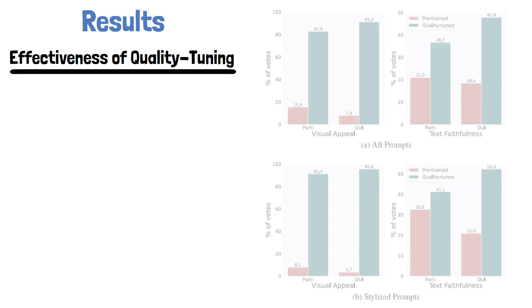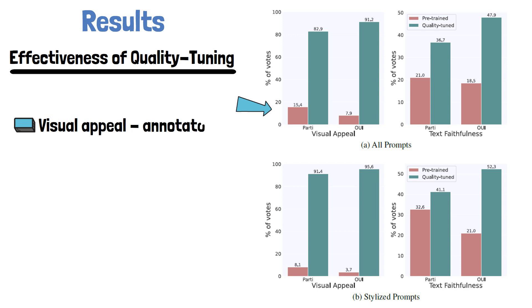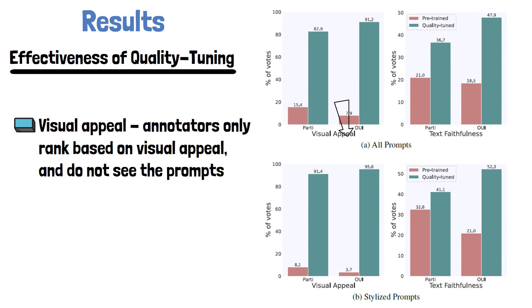Let's now review some of the results presented in the paper, starting with the effectiveness of quality tuning. In the following charts we can see a comparison between the pre-trained model in red, without the quality tuning stage, and EMU which includes the quality tuning stage in green. The comparisons were done using human annotators. On the top left we see a comparison for visual appeal, where annotators rank the output from two models based only on visual appeal without seeing the prompt. The quality tuned model clearly outperformed the pre-trained model here.